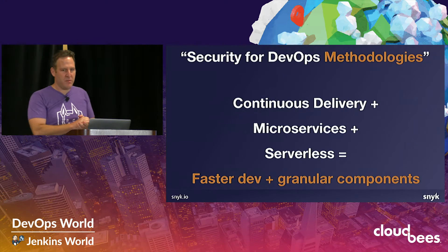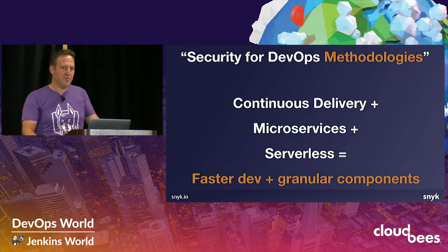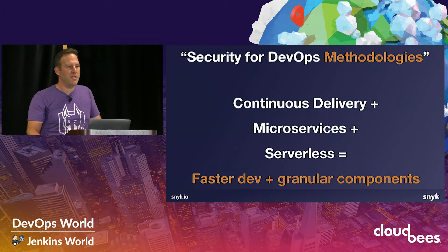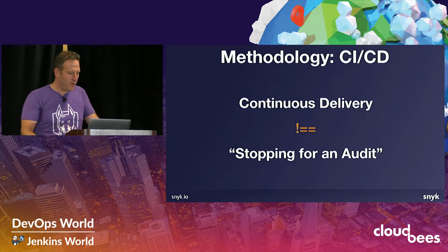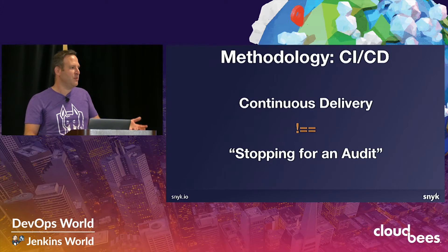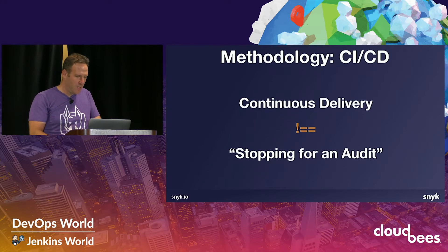DevOps by itself introduced not only technologies, but also new methodologies that change how we work. Some of them being continuous delivery and microservices, and later serverless. What all these lead to is faster development and more granular components, both of which introduce new challenges. With the introduction of continuous delivery, what went away is the ability to stop and do an audit. In the old days with two releases a year, the security team could inspect the application for a month and approve or not approve it. That all went away, and that requires adaptation.